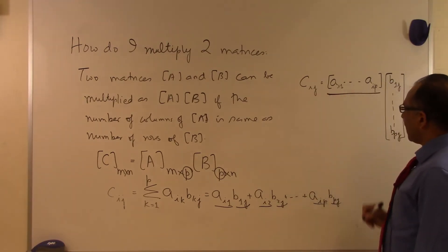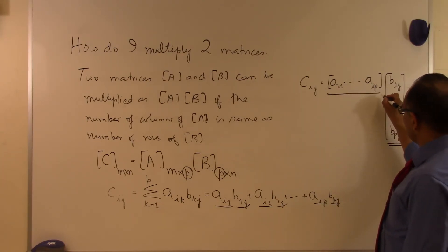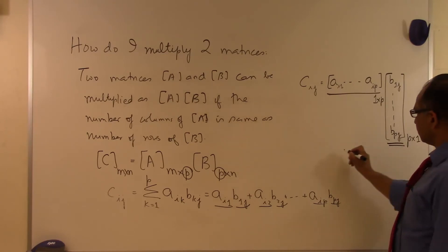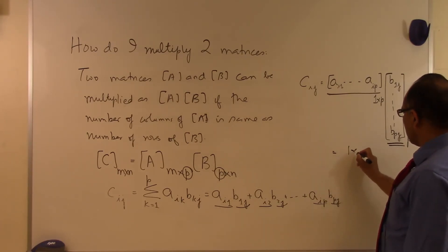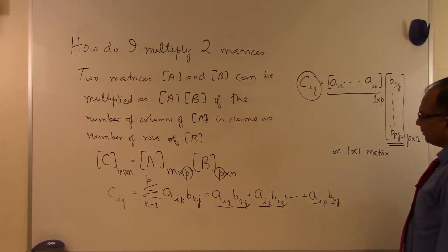We're taking the ith row of A and the jth column of B to find this product. This is one row with P columns times P rows with one column, which results in a 1×1 matrix—a scalar—corresponding to the C_ij element.